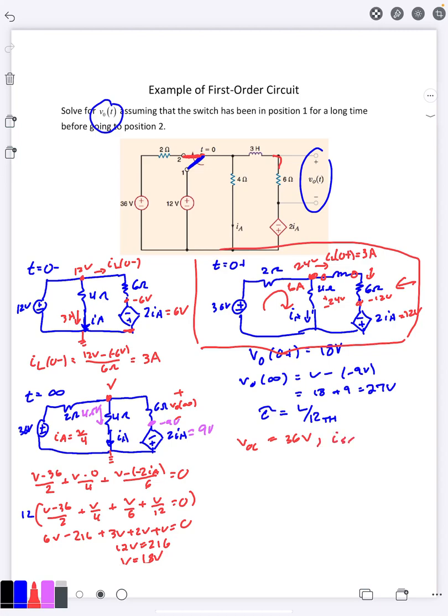If I then want to find my ISC, that's the current that happens if this becomes a short circuit. Lo and behold, we actually already figured that out over here because in this case it was a short circuit. And let's see, we know this is going to be 18 volts on top. This is negative 9. So there's a 27 volt drop across the 6 ohm resistor. And so this current here is going to be 27 over 6. That's going to be 4.5 amps here. And so now we have our ISC is 4.5 amps, which means my R Thevenin is VOC divided by ISC. It's going to be 8 ohms.